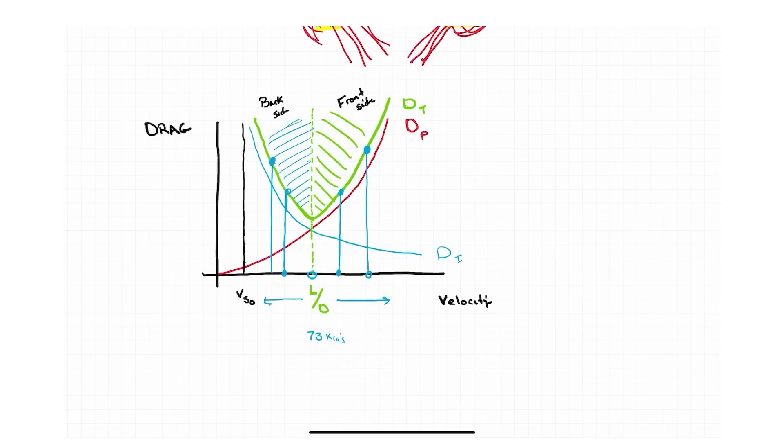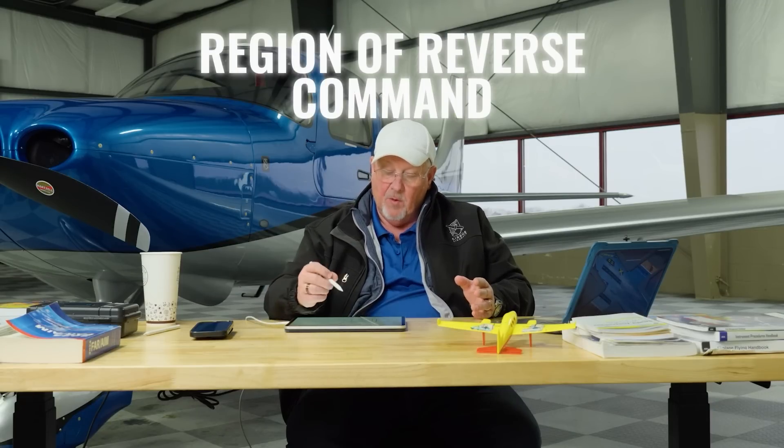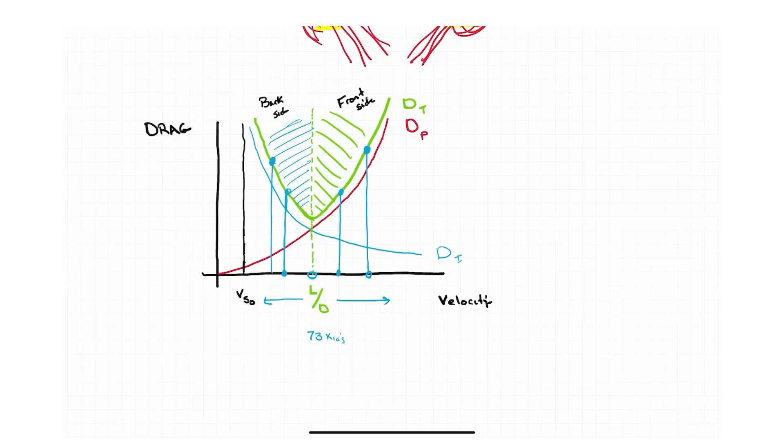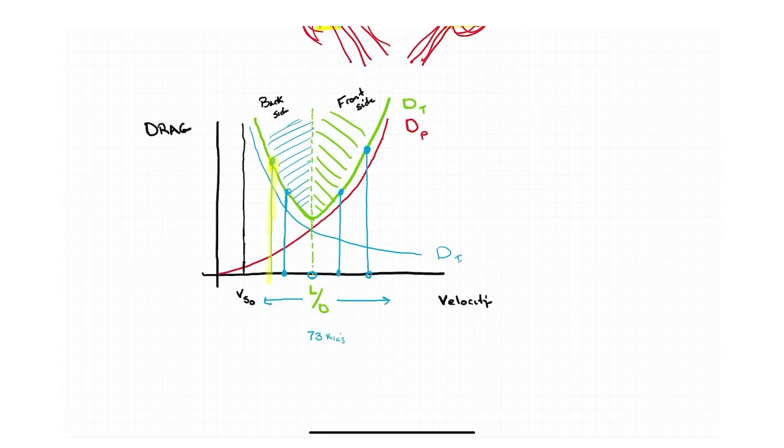So the summary here is: best lift over drag is the spot where the parasite and the induced drag curves cross, and it's the lowest point of total drag. That's how we get to best glide. And I'm on the back side of the power curve, also known as the region of reverse command, if I'm going this speed here, right here. I want to speed up. Well, I've got to get rid of induced drag.